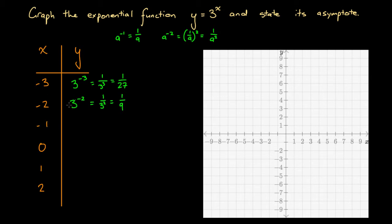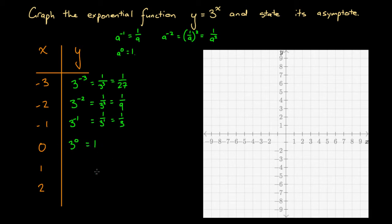At x equals minus 1, we have y equals 3 to the power of minus 1, and this is going to be equal to 1 over 3 to the power of 1, which is just 1 over 3. At x equals 0, we have 3 to the power of 0 — anything to the power of 0 is 1, so 3 to the power of 0 equals 1. At x equals 1, 3 to the power of 1 just equals 3. And at x equals 2, 3 to the power of 2 — that equals 9.